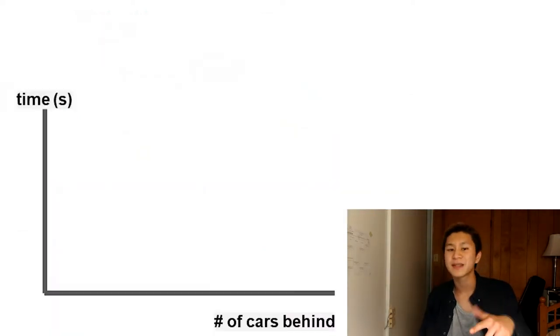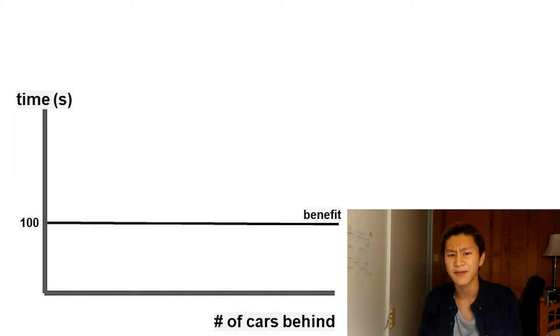We can represent this situation with a quick graph. When turning left, the personal net benefit is always 100 seconds saved. But the cost of my decision depends on the number of cars behind me, which is represented by the blue linear function.